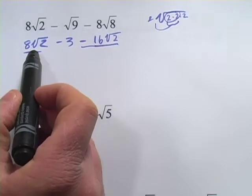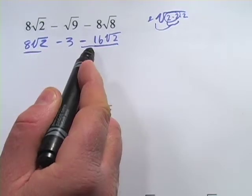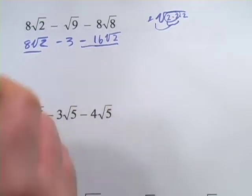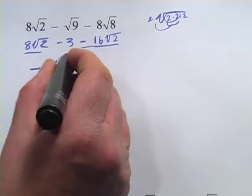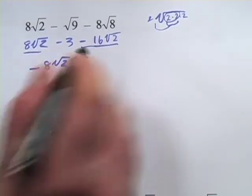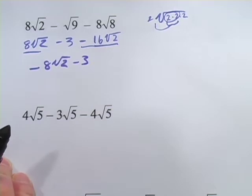Those can be added together. So a positive 8 times the square root of 2 minus 16 times the square root of 2 is a negative 8 times the square root of 2. And then we have our minus 3. And that is as simple as we can get it.